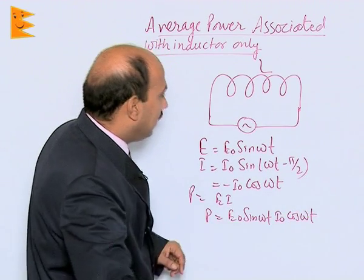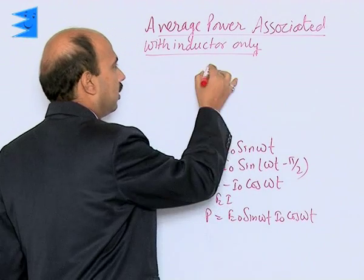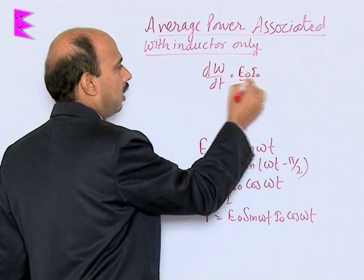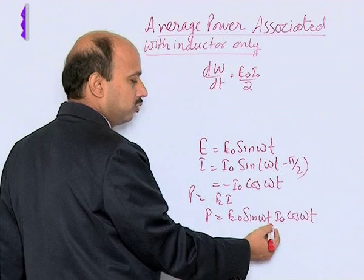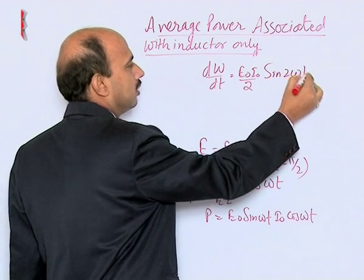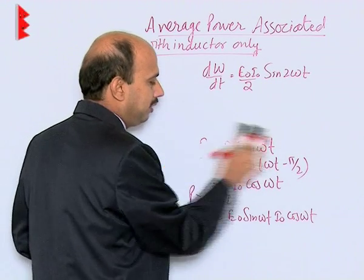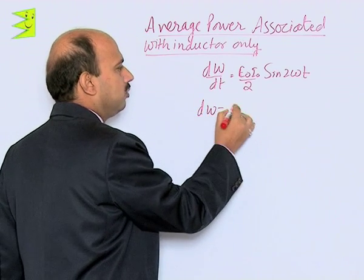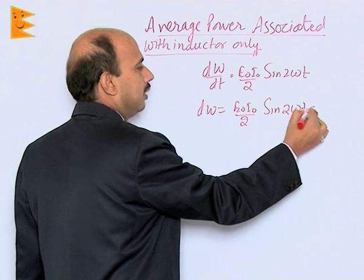Now we can write power is equal to dW by dt, so we can calculate the total work done. Here dW upon dt is equal to E naught I naught upon 2 — multiplying and dividing by 2 — so sin omega t cos omega t becomes sin 2 omega t. After writing sin 2 omega t, we integrate it, giving dW equal to E naught I naught upon 2 times sin 2 omega t dt.